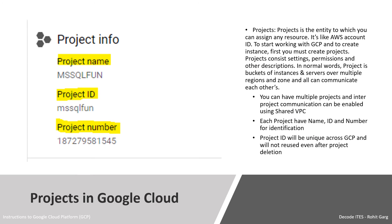Projects in Google Cloud. A project is the entity to which you can assign any resources — it's similar to an AWS account ID. To start working with GCP and to create instances, you must first create a project. A project consists of settings, permissions and other descriptions. In normal terms, a project is the bucket of instances and servers over multiple regions and zones that can communicate with each other. You can have multiple projects, and inter-project communication is possible using shared VPC. Each project has a name, ID and unique number for identification. The project ID will be unique across GCP and you cannot reuse it even after deletion of the project. For example, this is our project name — MS SQL Fund — the project ID is MS SQL Fund, and this is our project number.